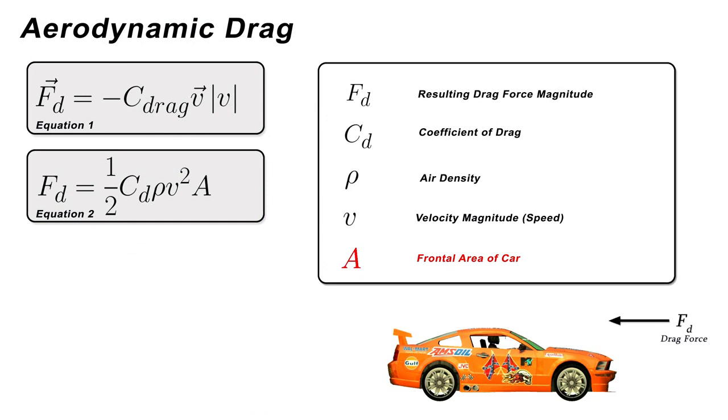The result of equation 2 is the magnitude of our drag force in Newtons. Now we want our drag force as a vector quantity, and therefore equation 3 shows the final equation to generate our drag force vector Fd.